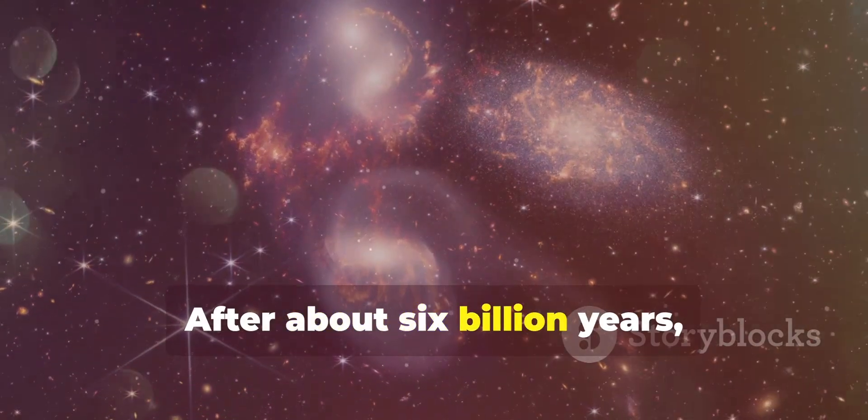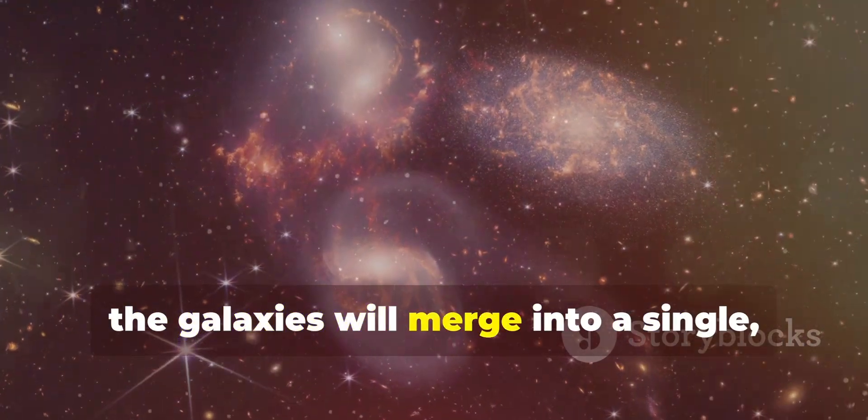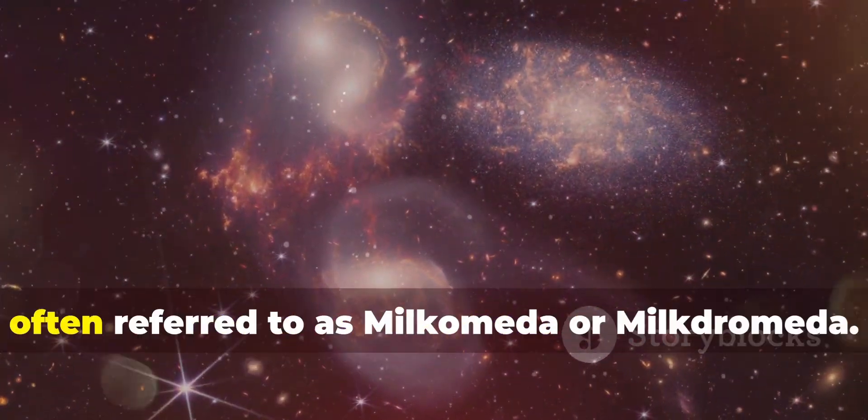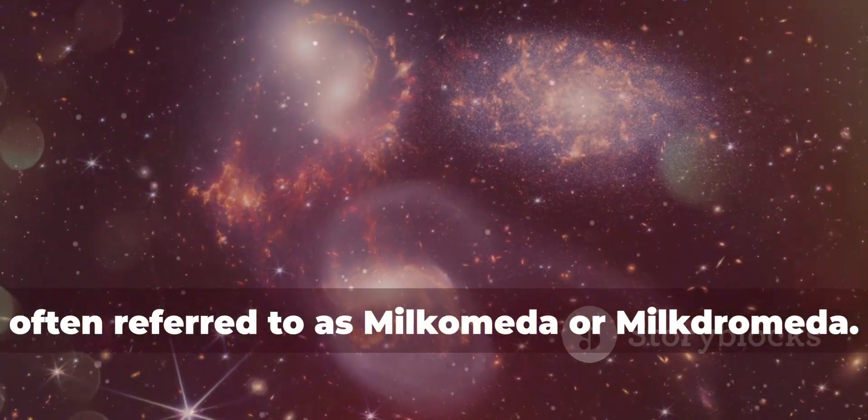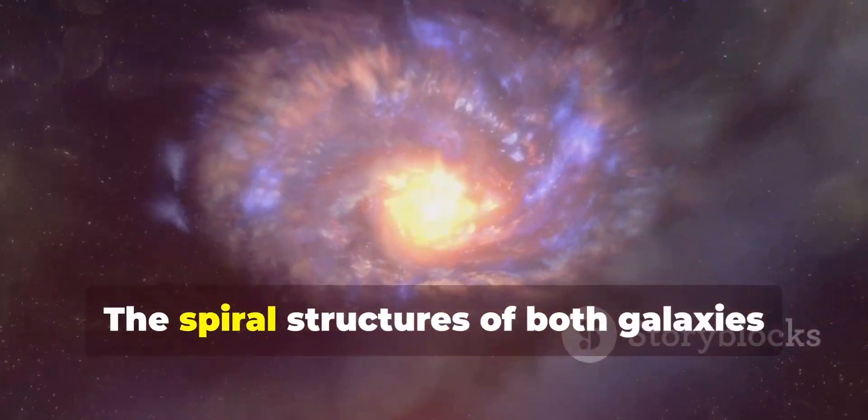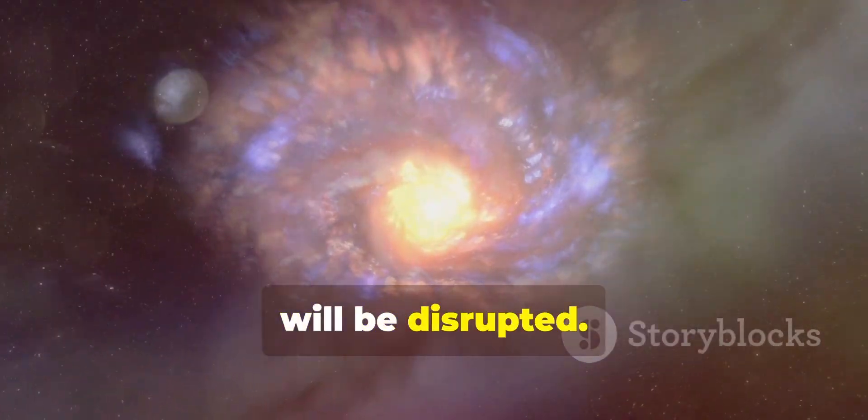After about 6 billion years, the galaxies will merge into a single massive elliptical galaxy, often referred to as Milkomeda or Milkdromeda. The spiral structures of both galaxies will be disrupted.